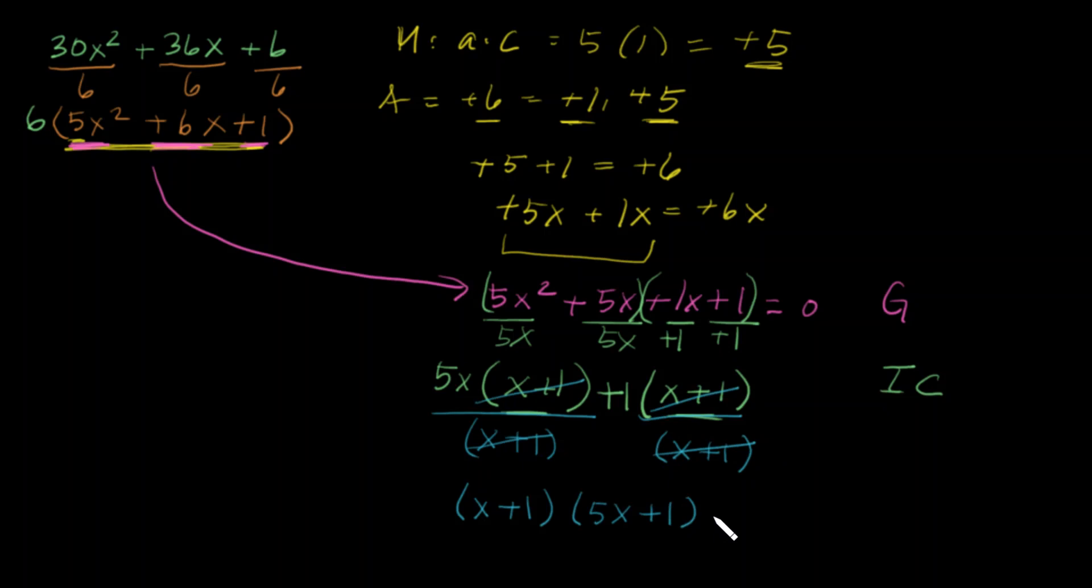Now this was originally equal to 0. These are my factors. You can take and put the 6 that you left behind right there, and right here are the factors of 30x squared plus 36x plus 6. If you actually foil this and then multiply the whole trinomial by 6, that's what you'll get. Good job.